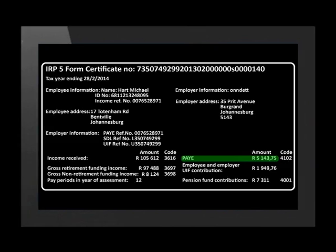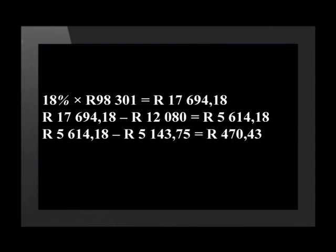Now this amount is the tax due, calculated from an income of 98,301 rand. He has however paid tax throughout the year on his monthly salary. So now we need to calculate if he owes tax or if he's going to be refunded for excess tax paid. From the document, we see that an amount of 5,143.75 rand has already been paid in taxes. We now subtract what Michael has already paid from the calculated amount due: 5,614.18 rand minus 5,143.75 rand equals 470.73 rand. This means that Michael still needs to pay an amount of 470.73 rand over to the tax collecting authority.